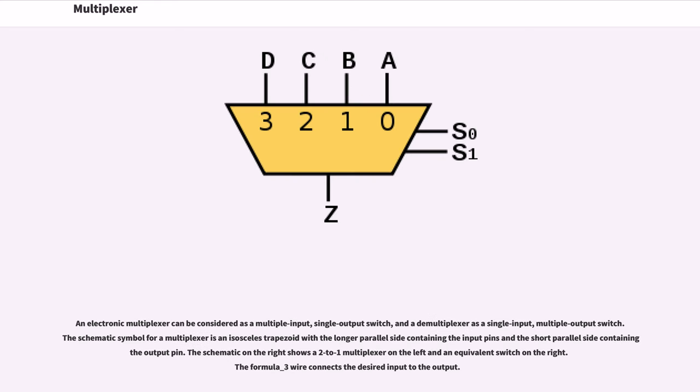An electronic multiplexer can be considered as a multiple input, single output switch, and a demultiplexer as a single input, multiple output switch. The schematic symbol for a multiplexer is an isosceles trapezoid with the longer parallel side containing the input pins and the short parallel side containing the output pin.